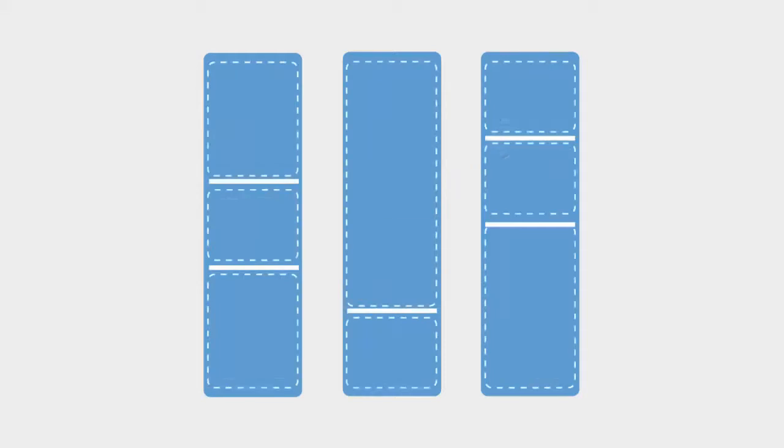OtisRack uses movable dividers which can be adjusted to fit bigger things, smaller things, or whatever you need.